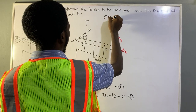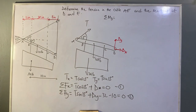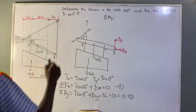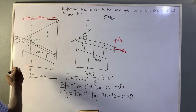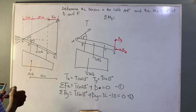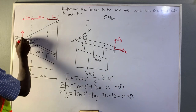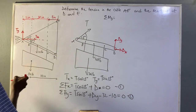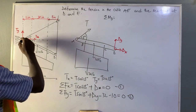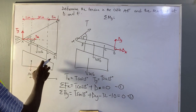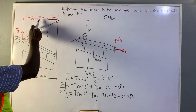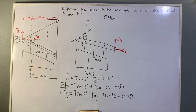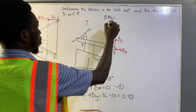Now let's look at the moment. We take the moment about point D. Considering the tension force, its y-component will act here and its x-component here. The y-component causes a clockwise moment, and the perpendicular distance from point D is 11 inches plus 30 inches plus 11 inches, giving 52 inches. The moment caused by the y-component is minus T sine 15° multiplied by 52 inches.